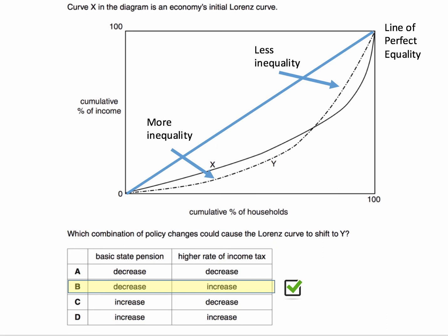So once you've understood this, it's relatively straightforward to think about what might have caused this. The basic state pension is an important source of welfare income to poorer families, particularly with nobody in work. And so if the basic state pension is being cut, that would hit disproportionately poorer households. An increase in the higher rate of taxation — for example, from 40% to 50% — would act to bring about a more equitable, equal distribution of income at the top end, because it would be increasing the progressivity of the tax system. An increase in the marginal tax rate will increase the average tax rate paid by households on high incomes.